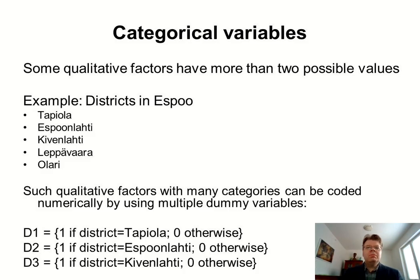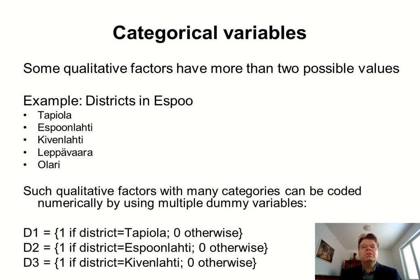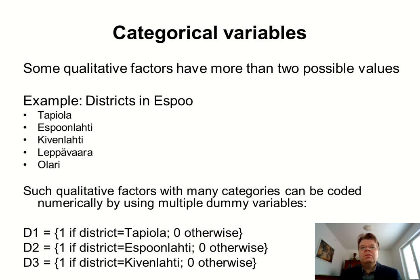Dummy variables can also be very useful when there are multiple categories rather than just two. In this housing market example we have information about the district. So far I have only focused on the Tapiola district, but suppose we want to expand it to the entire Espoo area. Then we would have multiple districts — the most common ones in the dataset are Tapiola, Espoonlahti, Kivenlahti, Leppävaara, and Olari. And as in many applications, there is also a category 'other' that includes all remaining districts.